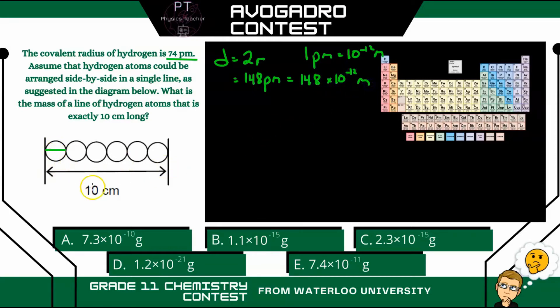Now this length is 10 centimeters long, or 0.1 meters. So to figure out how many atoms are aligned here, we can simply take that whole length, let's call it L, and divide by the diameter of one hydrogen atom, call that D.